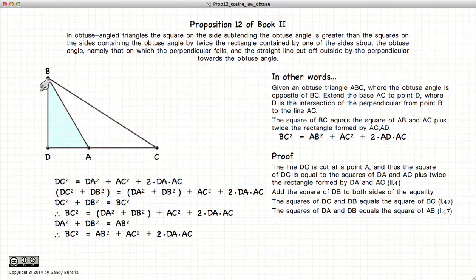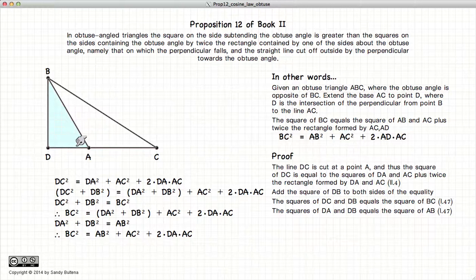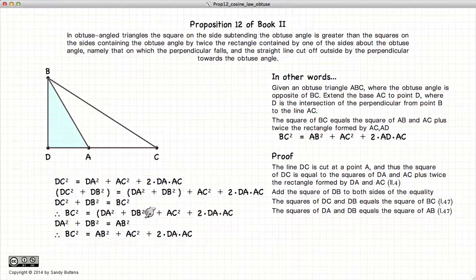Well, again, let's look at our triangle BDA. DA squared plus BD squared is equal to BA squared or AB squared. Again, taking this part of this equation and replacing it with AB squared,